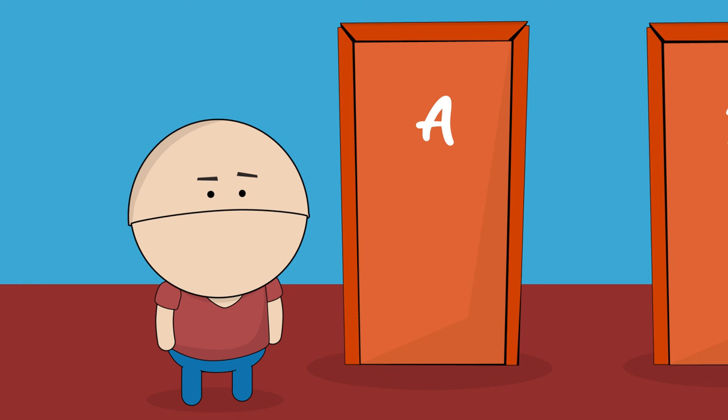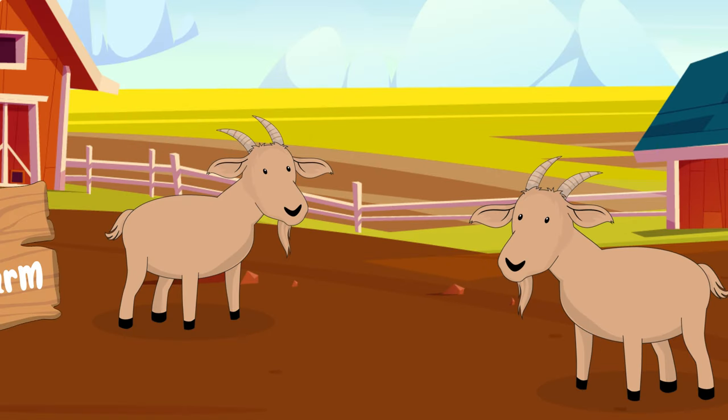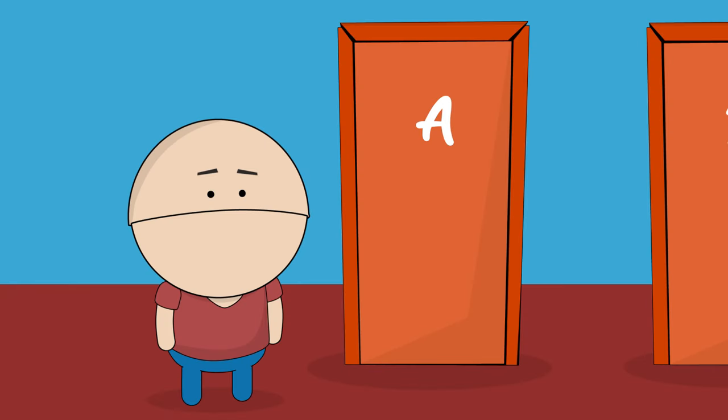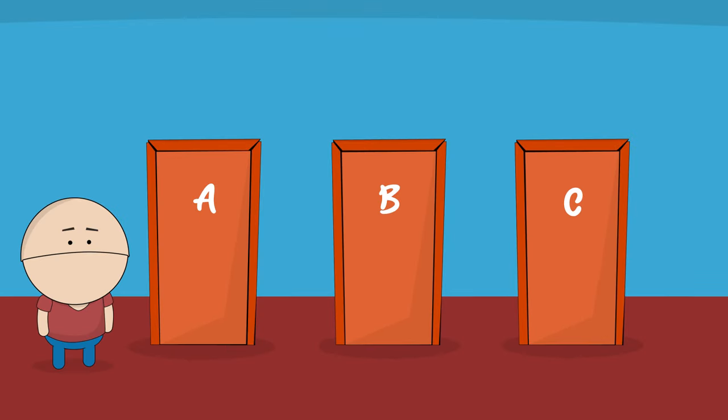The host tells you to pick one of the doors and you can keep whatever prize is behind it. Now I know what you're thinking, I'd really love a goat. But hold on, because these rams have a checkered past. So you decide to play it safe and go for the money instead, and pick a door at random, say door A.